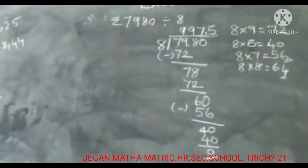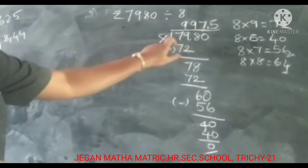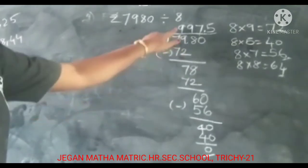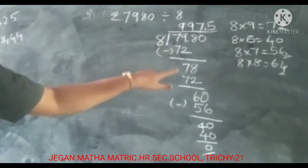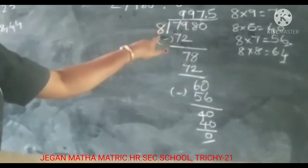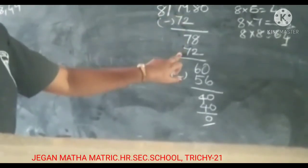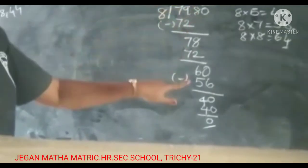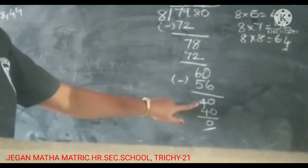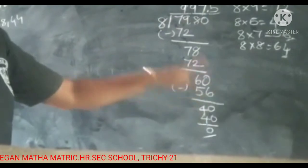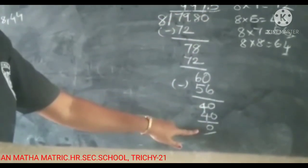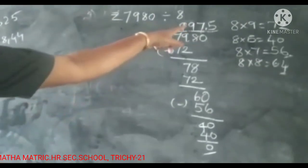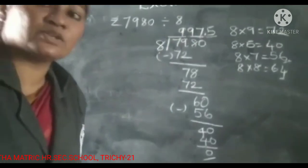Once again I explain. First check the first place value 7. Compared to 8, 7 is the lesser number. Consider 79. 8 nines are 72. 79 minus 72, the answer is 7. Then get down this 8. Same process. 8 nines are 72. 78 minus 72 is 6. Finally get down this 0. 8 sevens are 56. 60 minus 56 is 4. Make one dot here and add one 0. Then 8 fives are 40. 40 minus 40, 0. Clear. So the final answer, 997.5.